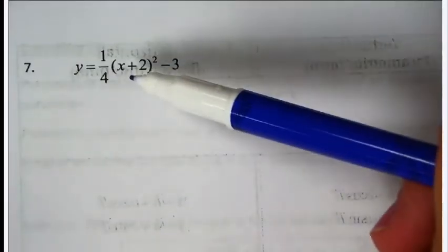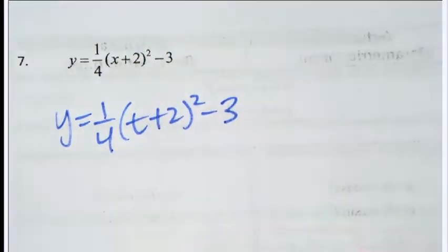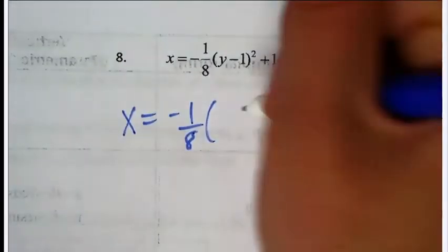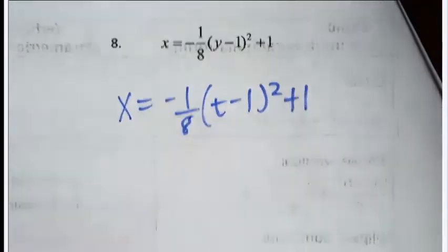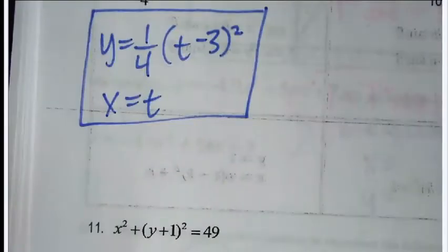Parabola is easy — all you do is change x into t. So: y equals one-fourth times (t plus 2) minus 3. You need two equations, so whoever you're missing — x equals t. For number eight: x equals negative one-eighth times (t minus 1) squared plus 1, and the second equation is y equals t.